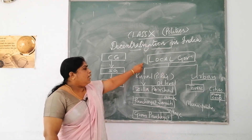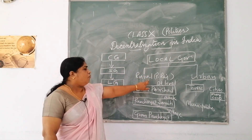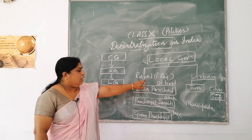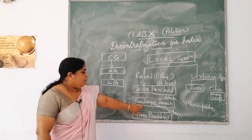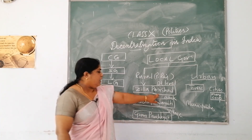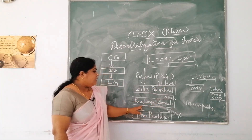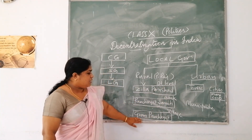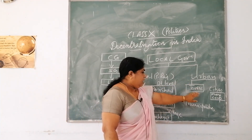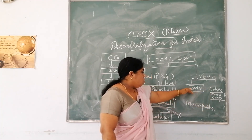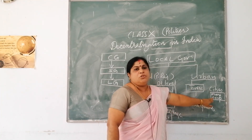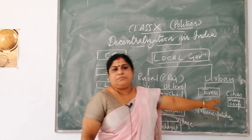Local government comprises both rural and urban bodies. In rural areas it includes Zilla Parishad at the district level, Panchayat Samiti at the block level, and Gram Panchayat at the village level. In urban areas, towns are governed by municipalities and cities by municipal corporations.